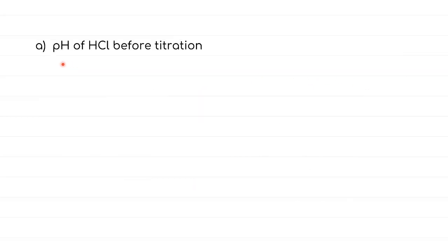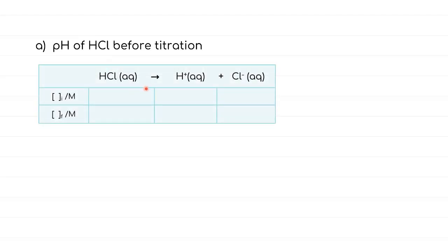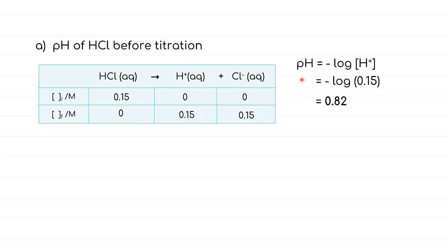The first question asks for the pH of HCl before titration. HCl is a strong acid, so it undergoes complete dissociation (single-direction arrow). Initially you have 0.15 M HCl; once dissociated, [H⁺] = 0.15 M. Substituting into pH = −log[H⁺] gives pH = 0.82.